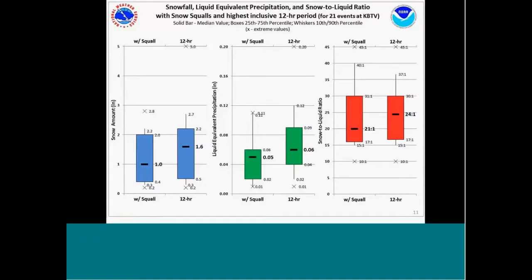Here at Burlington, we have a contract weather observer, and we were able to gather additional information for 21 events that affected Burlington, Vermont specifically. The snow amount associated with the squalls in the median was only one inch, and for the 12-hour period inclusive to the squall, 1.6 inches in the median — showing that they are sub-advisory events for our forecast area. The liquid equivalent precipitation is only about five-hundredths of an inch. The snow-to-liquid-water ratios tend to be quite high in these cases: a median of 21 to 1 and sometimes upwards of 30 to 1, reflecting the continental west-to-northwest flow which tends to produce dry precipitation.